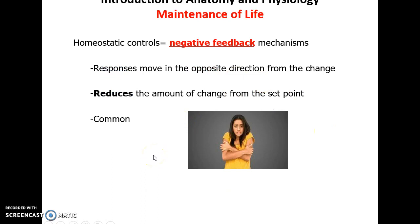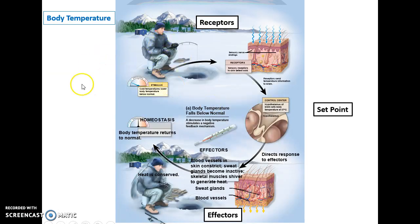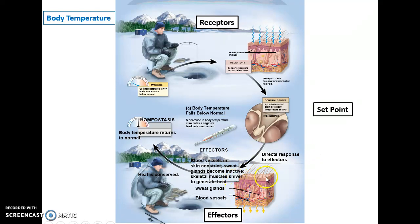Most of the time we're talking about negative feedback. There's a change from the set point, and we want to return it back, reducing the amount of change that occurred. For example, if you're out ice fishing and your body temperature decreases too much, receptors detect the change and send information to the brain, which compares it to the set point of 98.6°F. If temperature is too low, commands go to effectors — blood vessels constrict so less heat is lost through the skin, and skeletal muscles shiver to generate more heat — returning us to the set point.